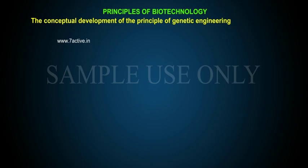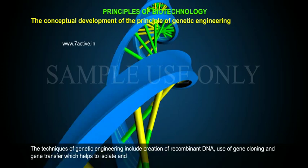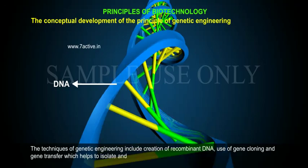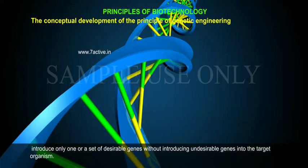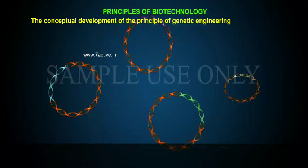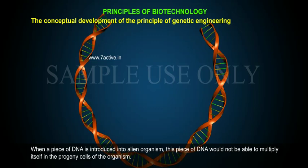The conceptual development of genetic engineering involves techniques including the creation of recombinant DNA, use of gene cloning, and gene transfer. These techniques help to isolate and introduce only one or a set of desirable genes without introducing undesirable genes into the target organism.